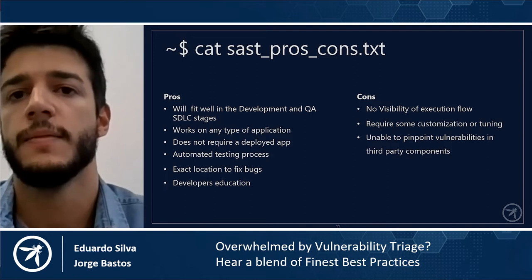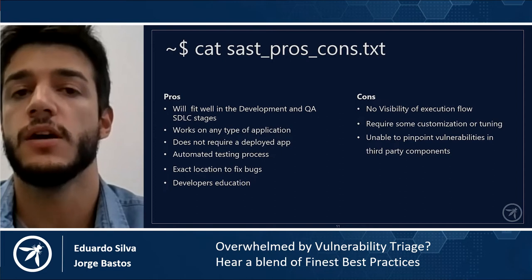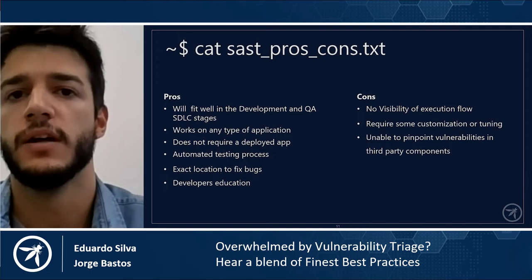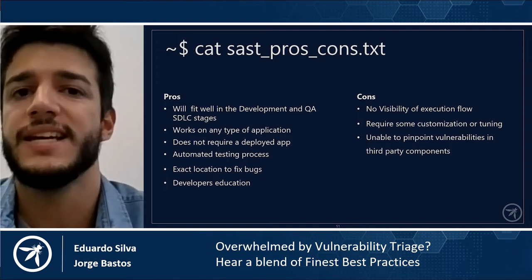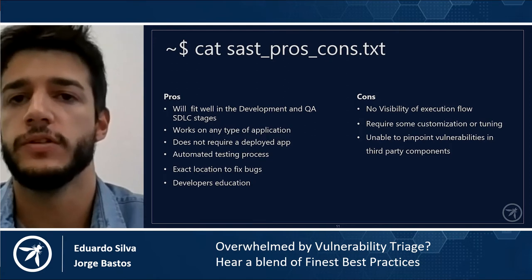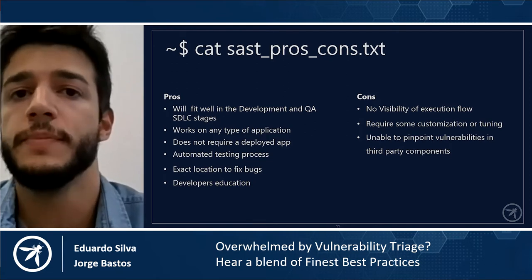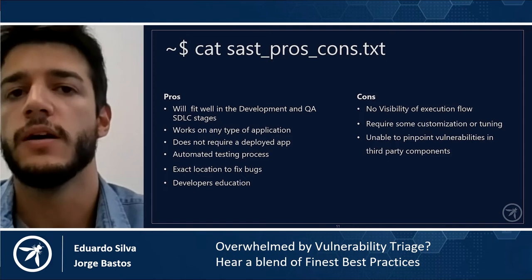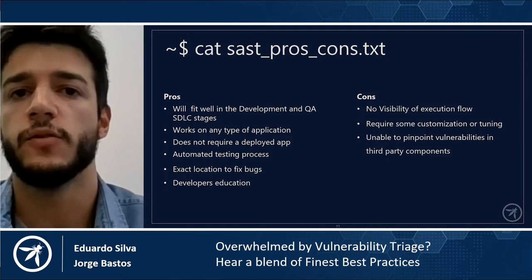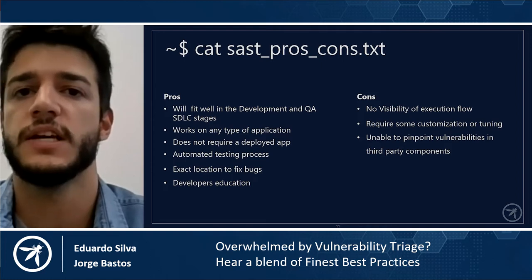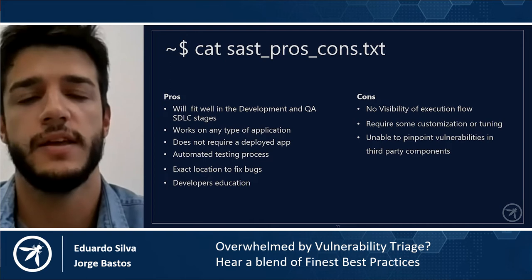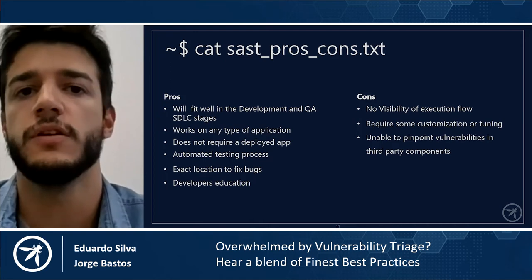Looking at the bright side, SAST has many strengths to offer. It works on any type of application and does not require a deployed app, allowing you to run a scan on any kind of file you want in your application. It can also be run repeatedly, as with nightly builds or continuous integration, scaling really well. The output of the scans is great guidance for developers. A major part of SAST tools highlights the source files, line numbers, and even subsections of lines that are affected, with the complete flow.